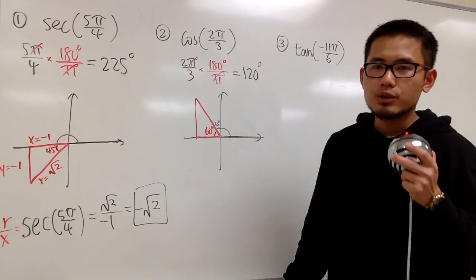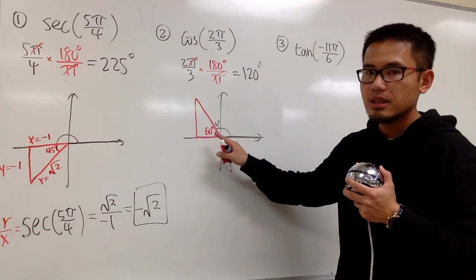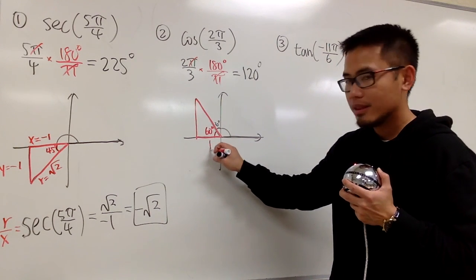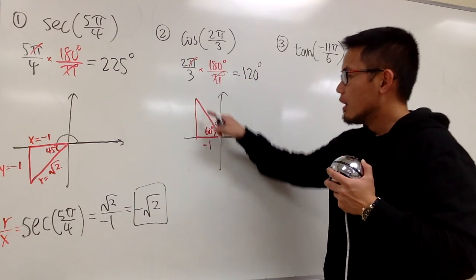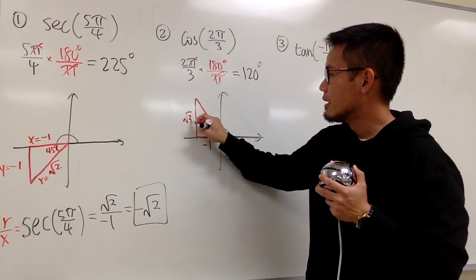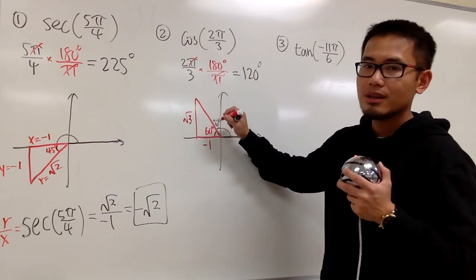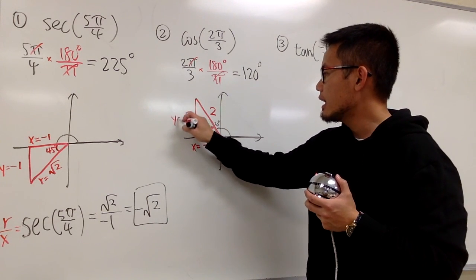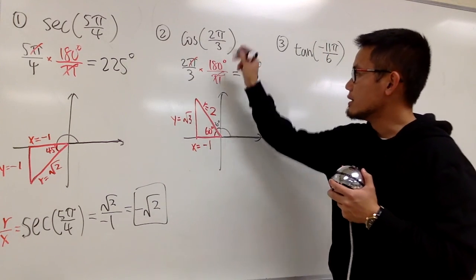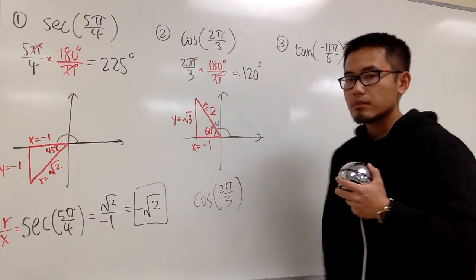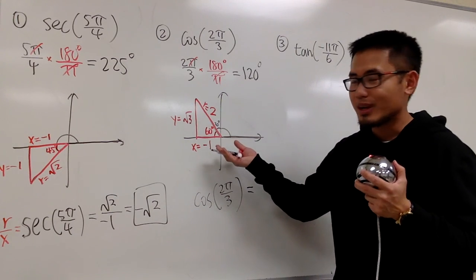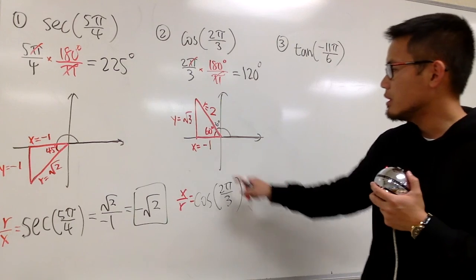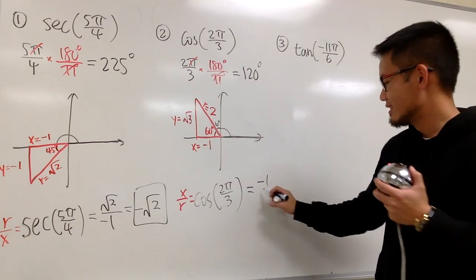Remember the ratio of the sides of the special right triangle. In this case it's the 30-60-90 case. This is the smaller angle, so this will be the smaller side: 1. But it's toward the left, so it's technically negative 1. This side will be square root of 3 — positive, because it's above the x-axis. The hypotenuse is 2. So x equals negative 1, y equals square root of 3, r equals 2. Cosine of 2π/3 is x over r, which gives negative 1 over 2, so negative one-half.